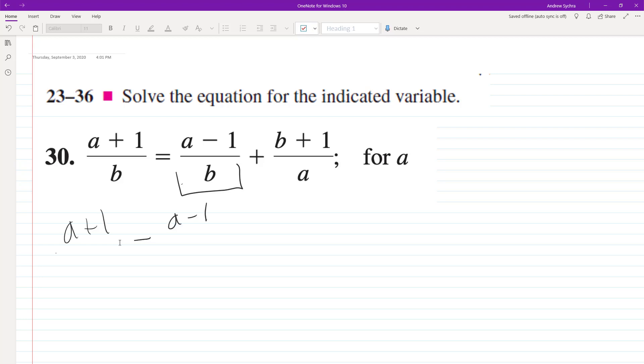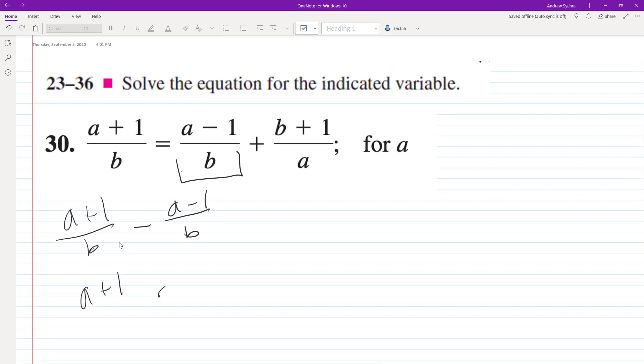They have a common denominator so we can combine them. We have a plus 1, and we distribute the minus sign: minus a plus 1, all over B.